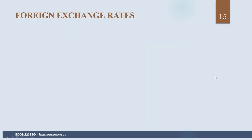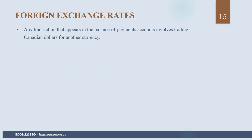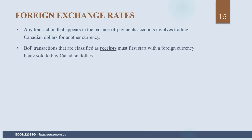Now let's discuss foreign exchange rates. Any transaction on the balance of payments accounts involves trading Canadian dollars for another currency. Transactions classified as receipts must first start with a foreign currency transaction where foreign currency is sold to buy Canadian dollars. For example, if someone buys maple syrup from Canada, at some point they need to convert their foreign currency into Canadian dollars to make the purchase.